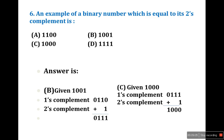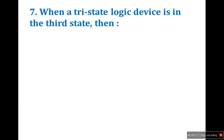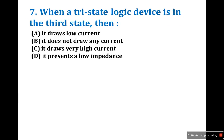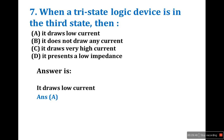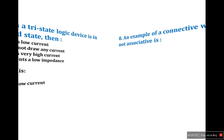I hope you understand how to tackle exam questions — they look difficult but if you know the approach they are easy. Seventh question: when a tri-state logic device is in the third state, it draws low current. This is a theoretical question — you need to know all states of logic. Answer is A.